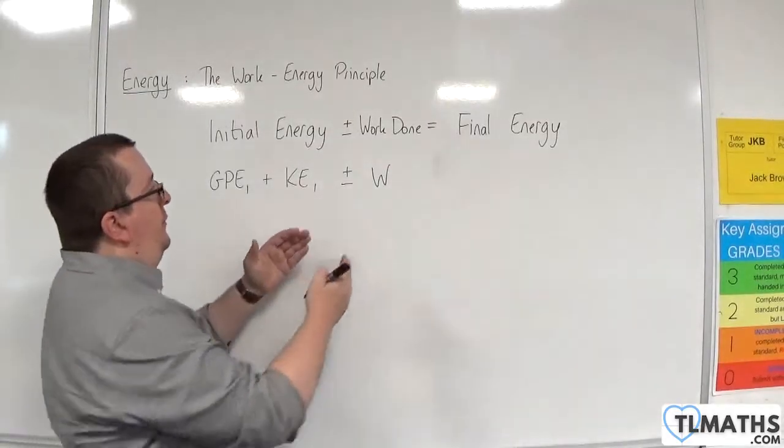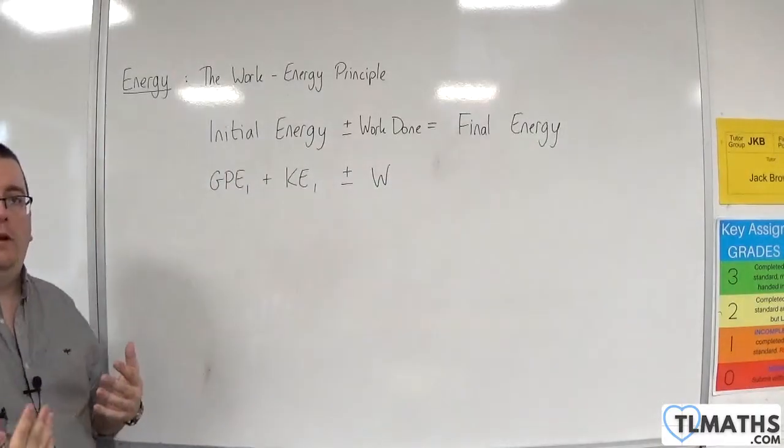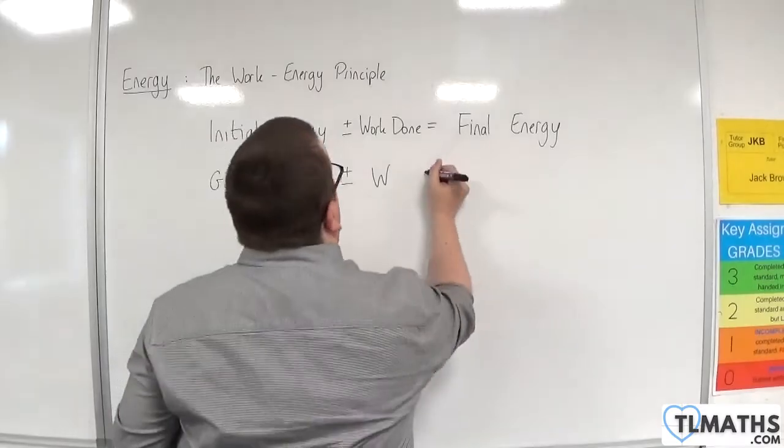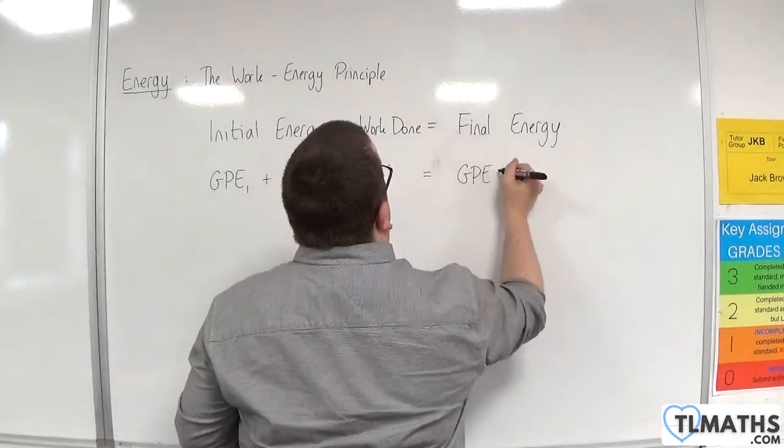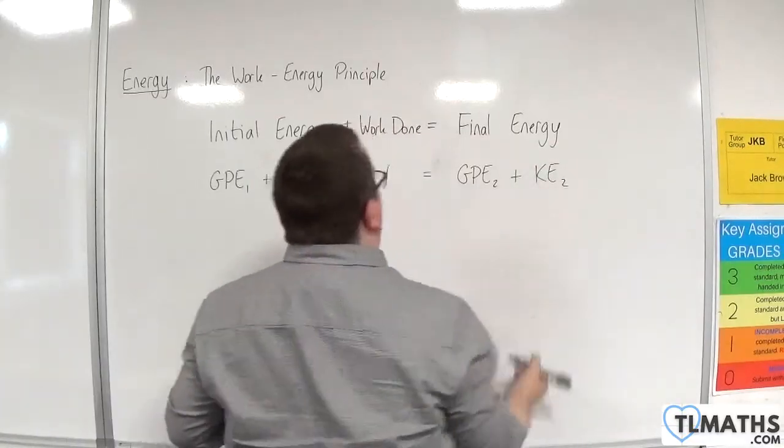So this is essentially a sum of the work done by the different forces that are affecting the object. And that's going to be equal to the final gravitational potential energy plus the final kinetic energy.